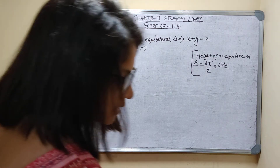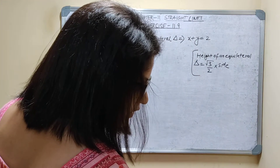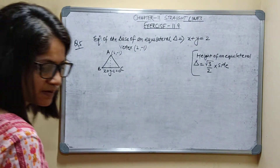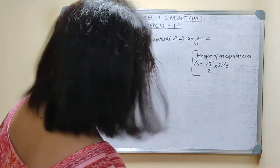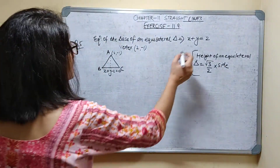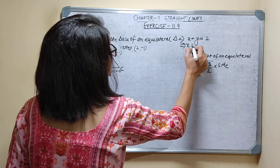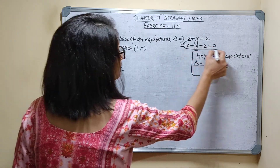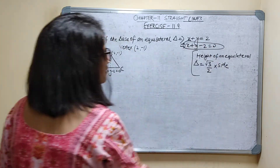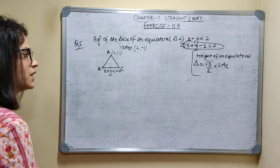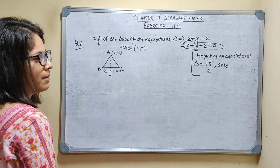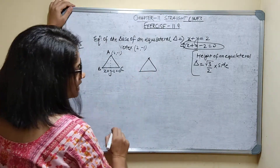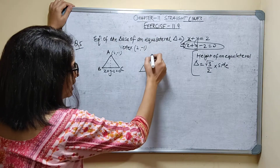Question number 5. If the equation of the base of an equilateral triangle is given as x plus y equals 2, I can write x plus y minus 2 equals 0. It is in the form ax plus by plus c equals 0. The vertex is given as (2, -1). So let's say this is the equilateral triangle.